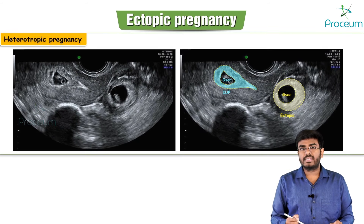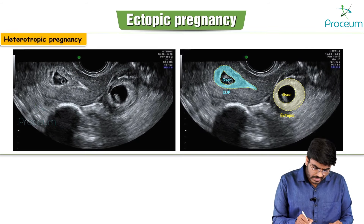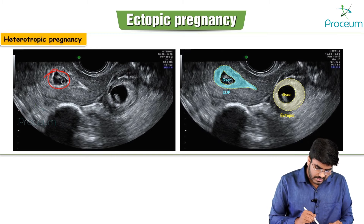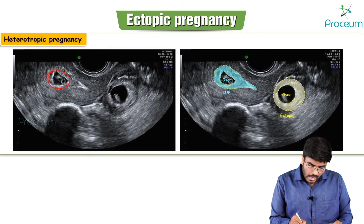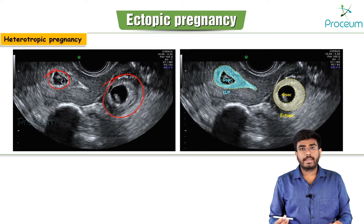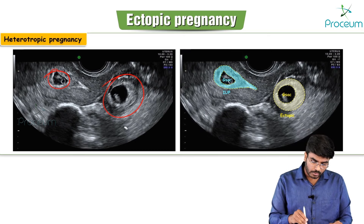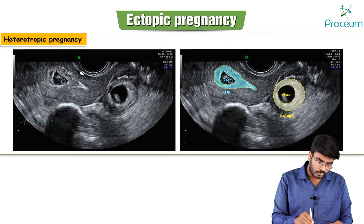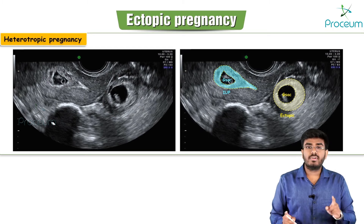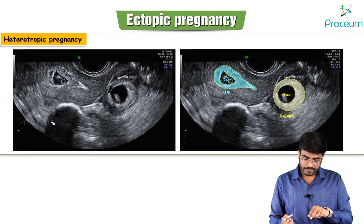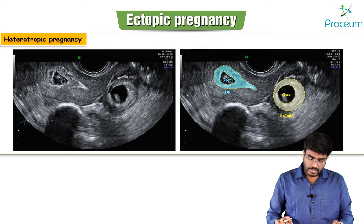Heterotopic pregnancy: on ultrasound you can see one pregnancy inside the uterus and one gestational sac with a hyperechoic ring outside the uterus in the adnexal region — one intrauterine and one ectopic pregnancy occurring simultaneously.